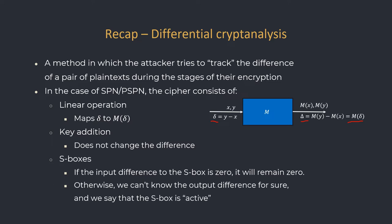For S-boxes, if the input difference was zero, it will remain zero, since a zero difference means the inputs were the same. Otherwise, we cannot know the output difference for sure, and in that case we say that the S-box is active. If we would like to know the output difference, we could only know it at a certain probability. So, if we lower bound the number of active S-boxes, it means that the probability of every characteristic will be very low.